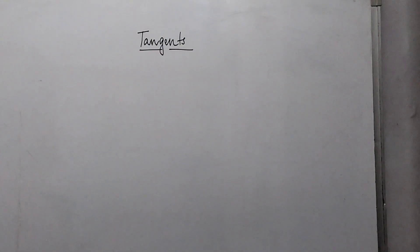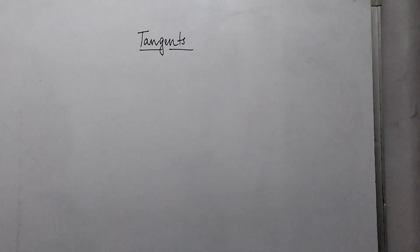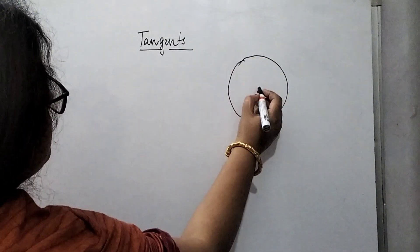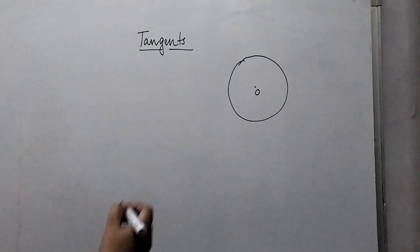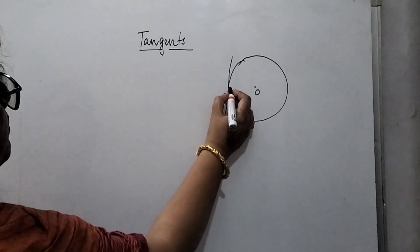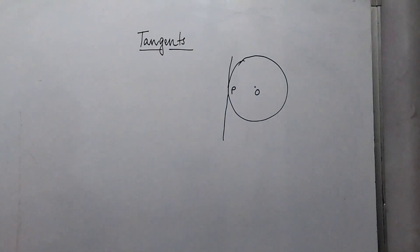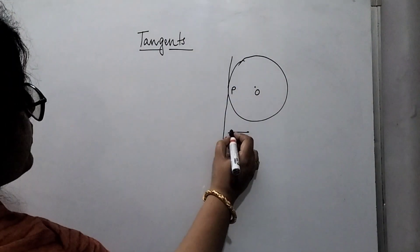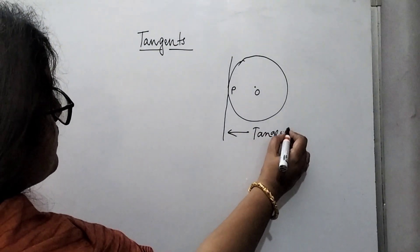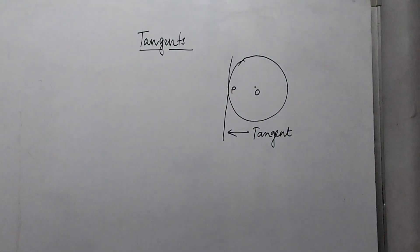First of all, we have to know what is a tangent. Tangent is a straight line which touches any conic at one single point. Like if you consider a very well-known conic, a central conic, suppose a circle — if we find a straight line which is touching the circle at one single point, suppose it is P here, then that straight line will be said to be the tangent to the circle at the point P.